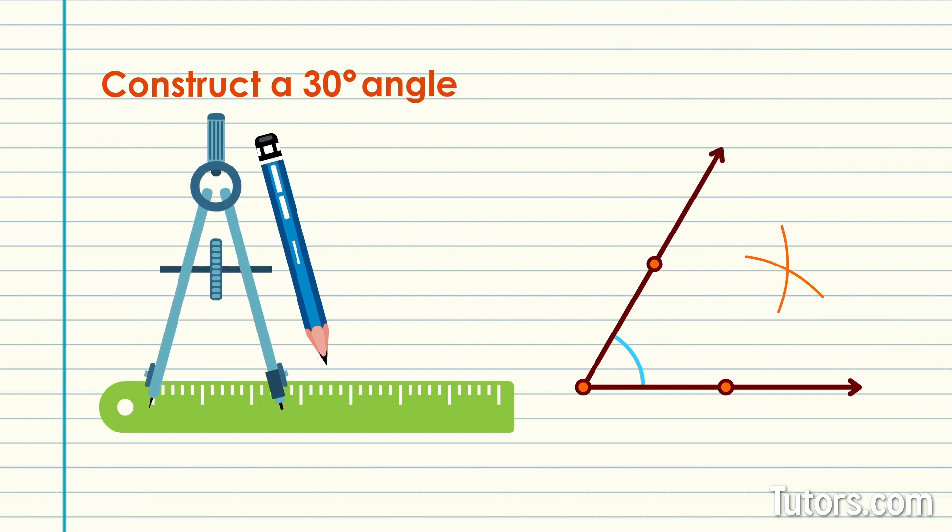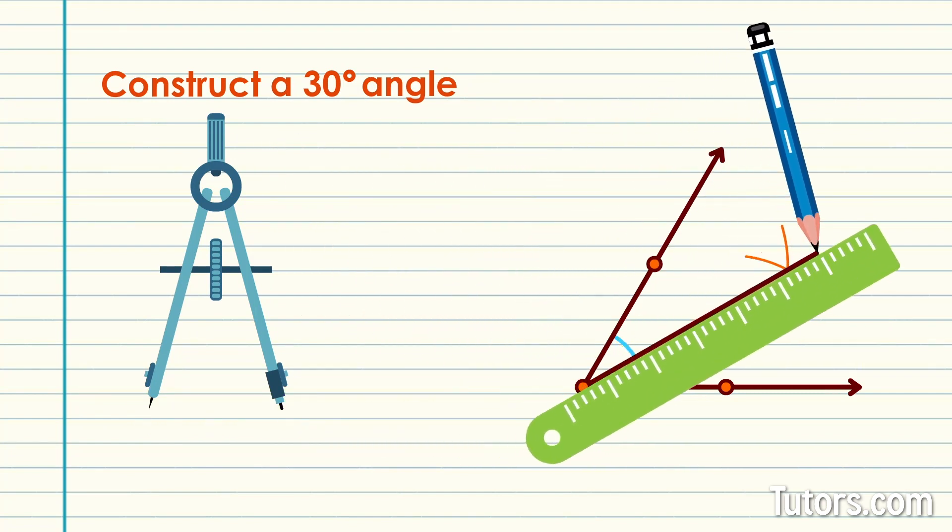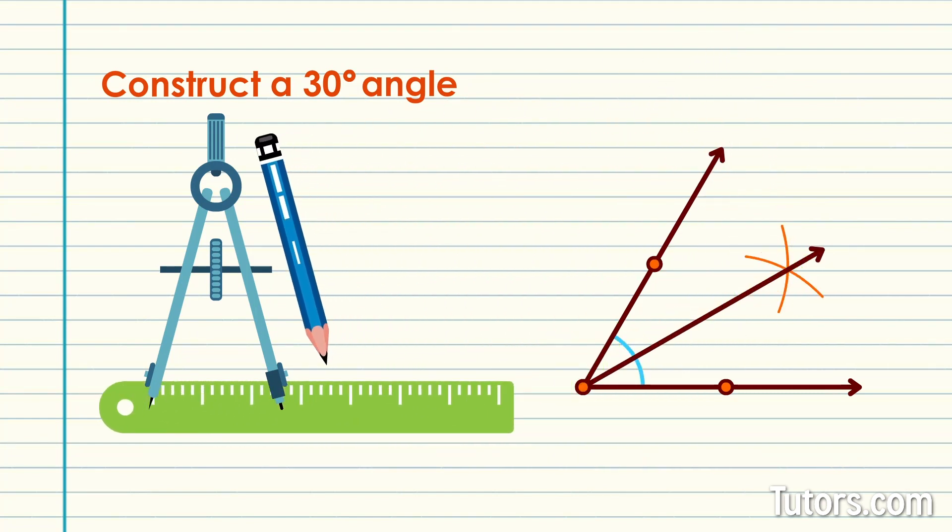Lastly, use the straight edge to connect the intersection of the two arcs with the vertex of the 60-degree angle. That line segment is an angle bisector, yielding two 30-degree angles.